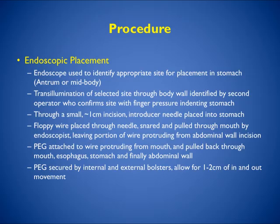With endoscopic placement, the endoscope is used to identify the appropriate site in the stomach, typically the antrum or midbody — you don't want to aim for the fundus. Transillumination of the selected site through the body wall is identified by a second operator who confirms the site with finger pressure. Through a small incision less than one centimeter, an introducer needle is placed into the stomach. A floppy wire is placed through the needle, snared, and pulled through the mouth, leaving portions protruding from the abdominal wall. The PEG is attached to the wire and pulled back through the mouth, esophagus, stomach, and finally the abdominal wall, secured by internal and external bolsters allowing one to two centimeters of in-and-out movement.